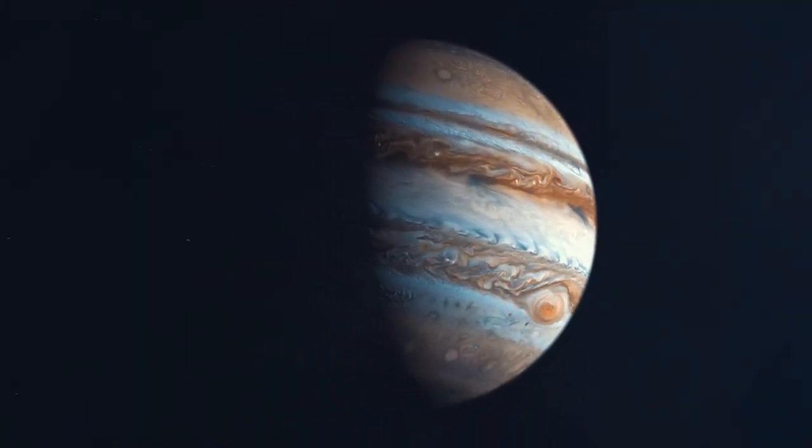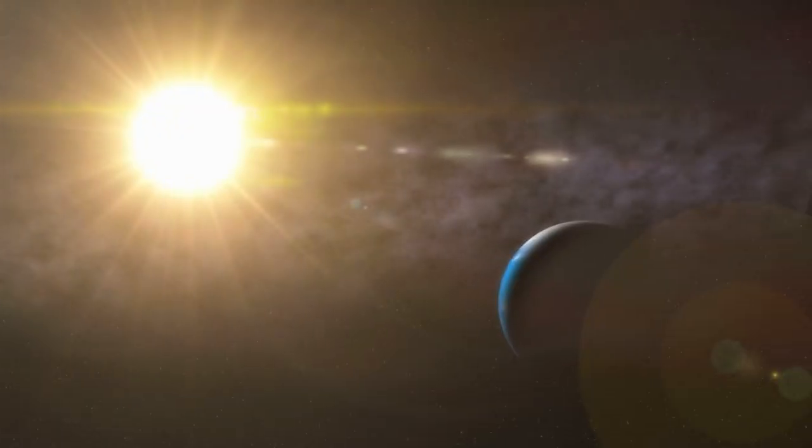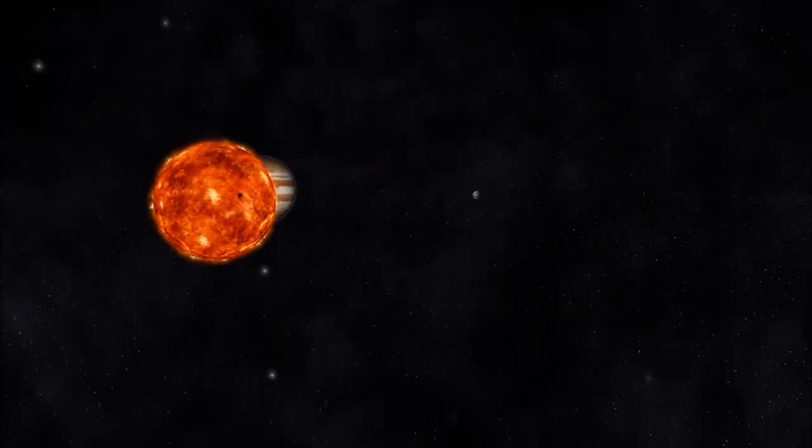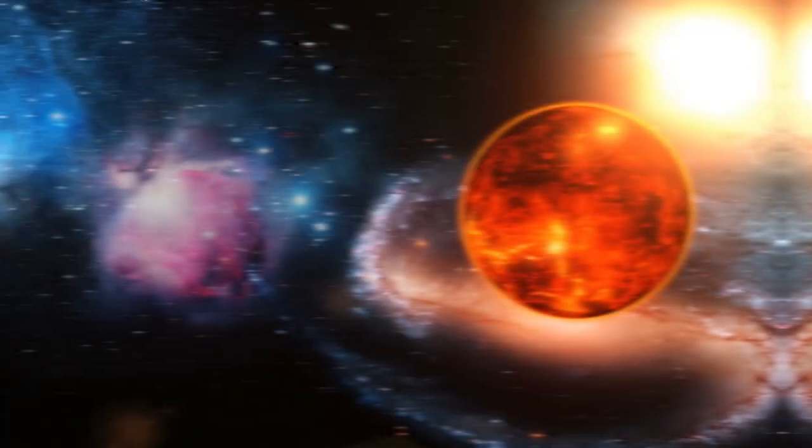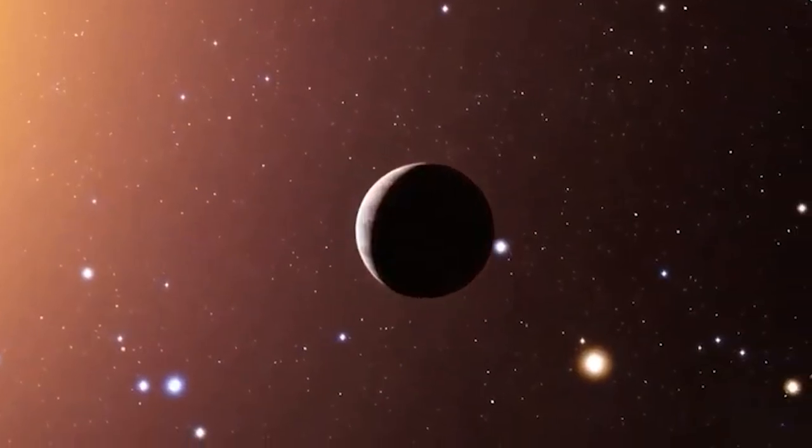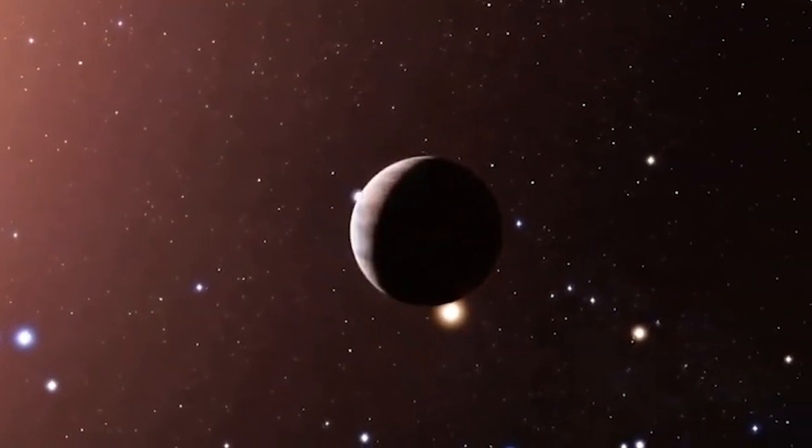Hot Jupiters, gigantic gas giants like our own, were the first planets discovered around regular stars like the Sun. Because of their close orbits to their host stars, these hot Jupiters are hotter than Mercury, and amongst them was WASP-76b, an absolute scorcher.